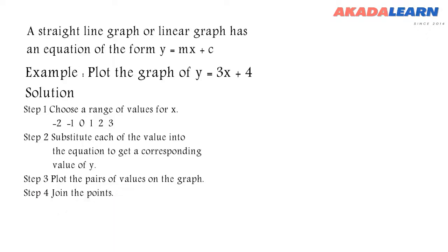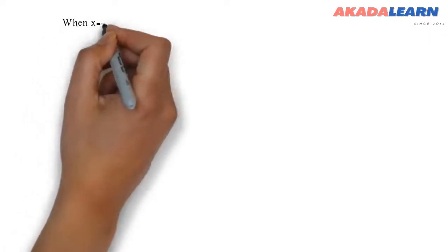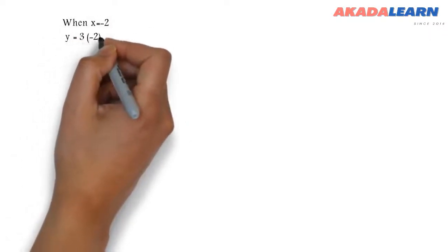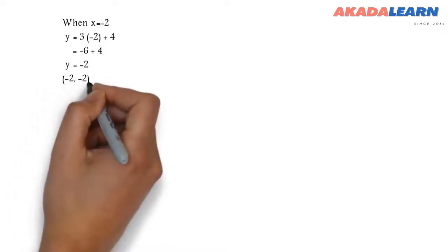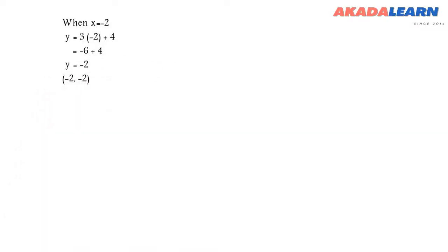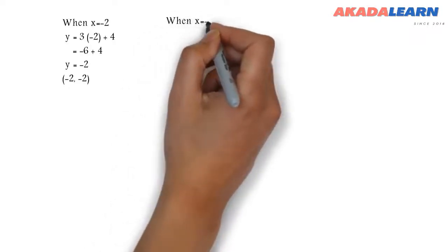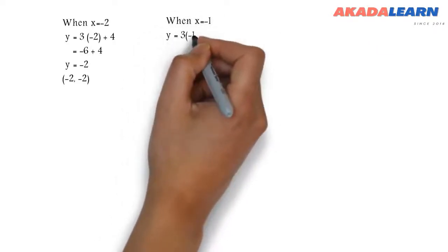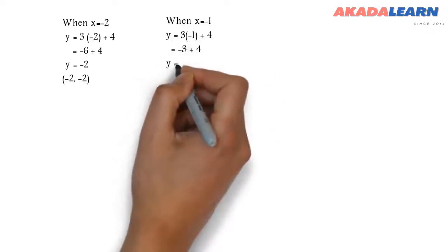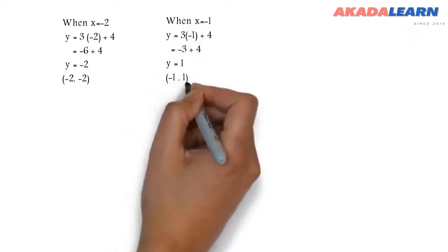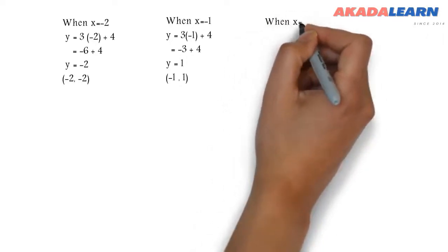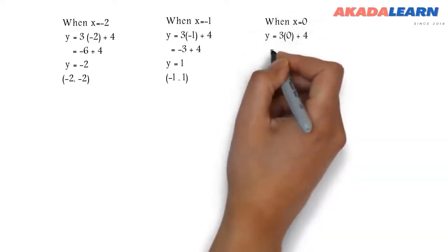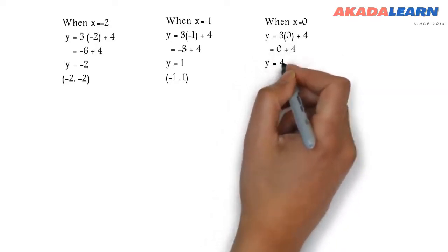Let's start. First, when x is -2, we substitute it into the equation and we get y = -2. Put them together as a pair: (-2, -2). When x is -1, we substitute x back into the equation and we discover that y is 1, so (-1, 1). When x is 0, we substitute x as 0 into the equation and our y is 4, so (0, 4).